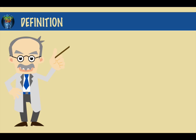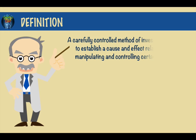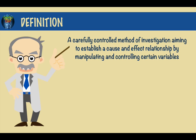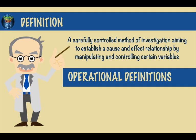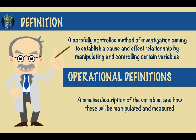The experimental or scientific method can be defined as a carefully controlled method of investigation aiming to establish a cause and effect relationship by manipulating and controlling certain variables. Operational definitions are a precise description of the variables and how these will be manipulated and measured.